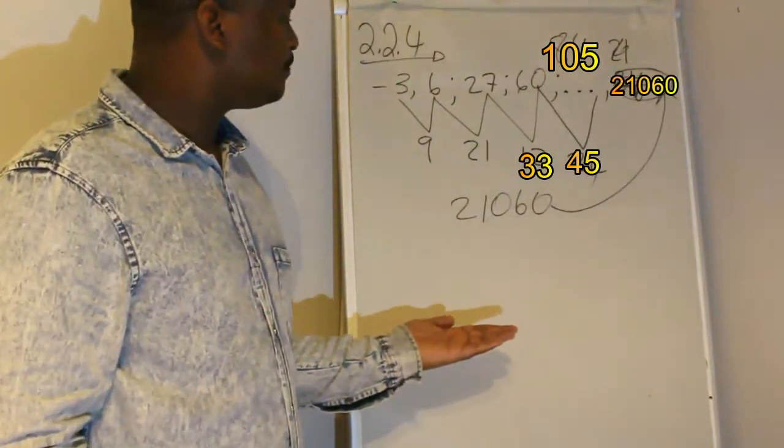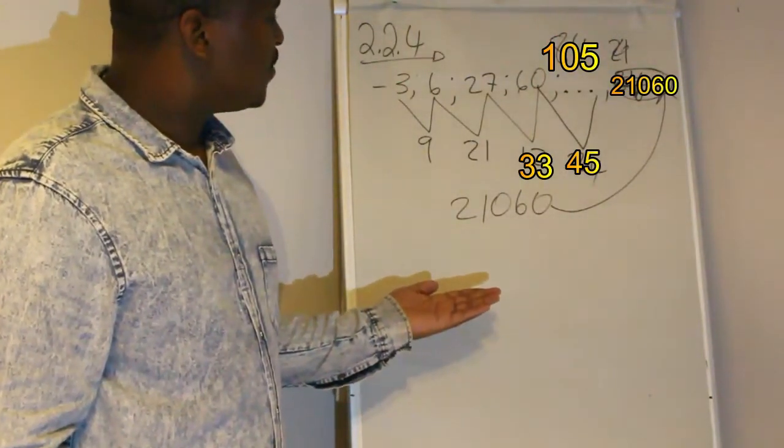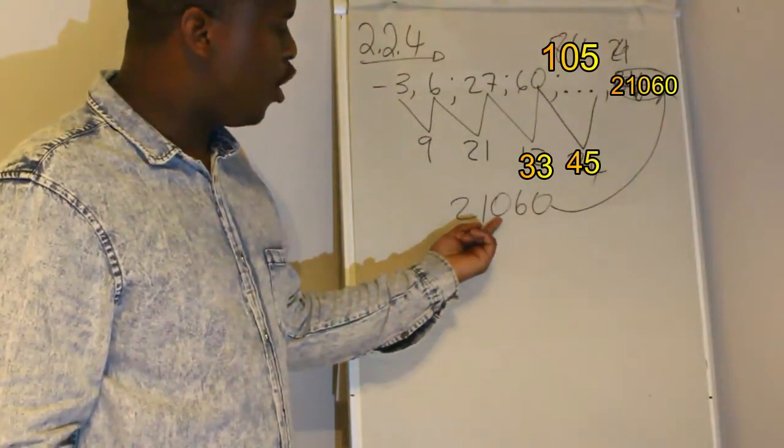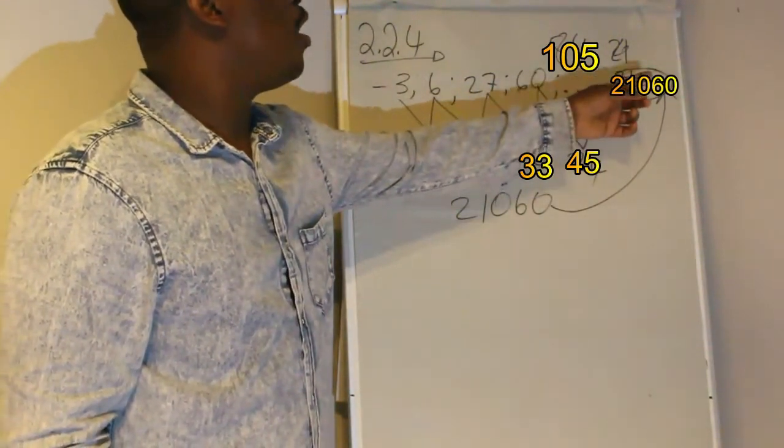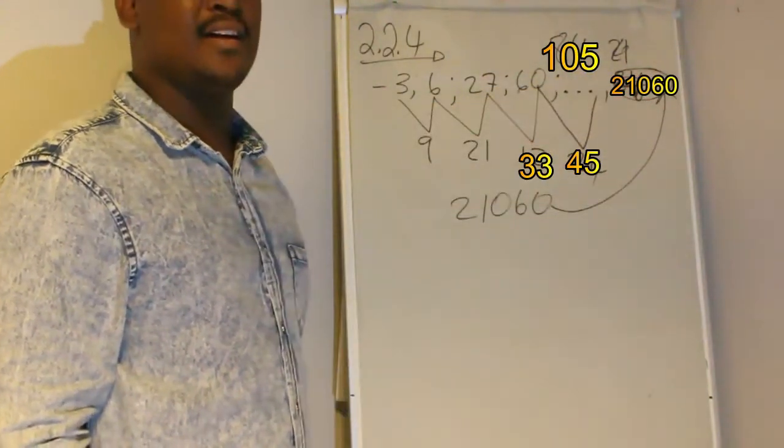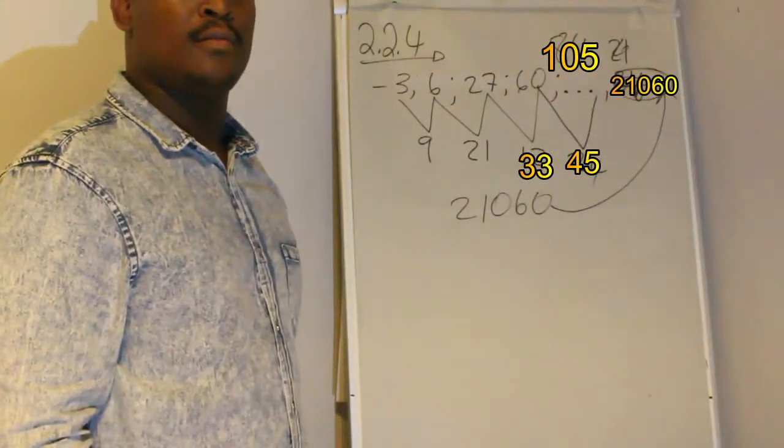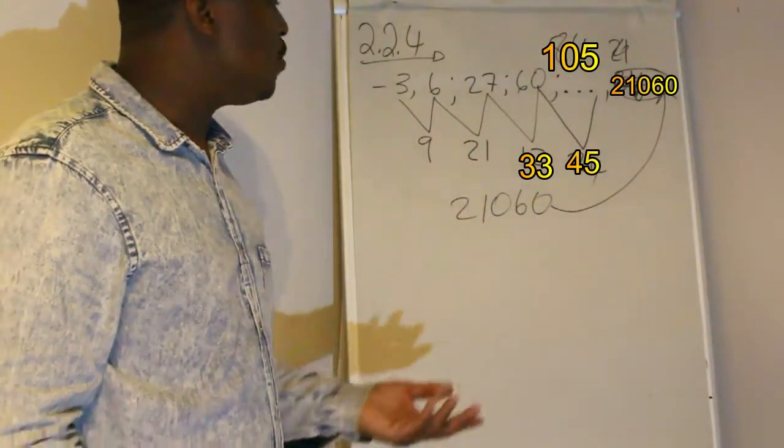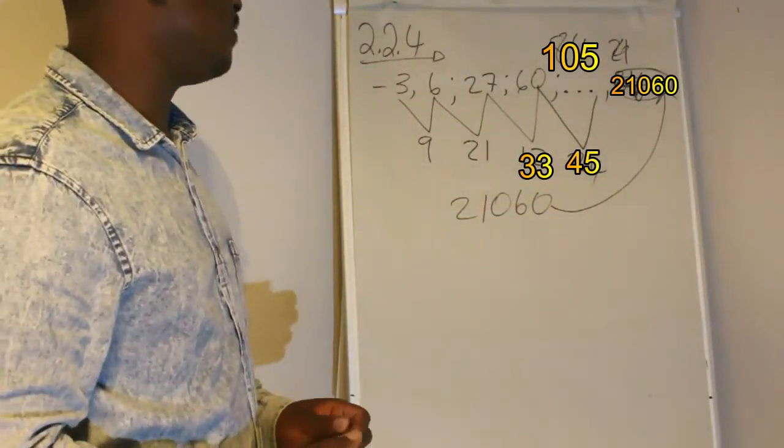So they're asking you how many terms from this first difference you must add in order to get to the term which is this value, which is the term 21,060, which belongs to this pattern. So there are many ways to solve this problem.